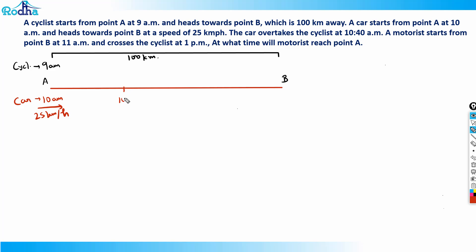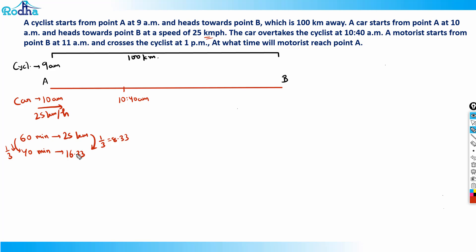From 10 am to 10:40 am is 40 minutes. In 60 minutes the car moves 25 km, so in 40 minutes — one third less — one third of 25 is 8.33, so the car moves 25 minus 8.33 = 16.67 km, which is 50/3 km. So in 40 minutes the car has moved 50/3 kilometers.